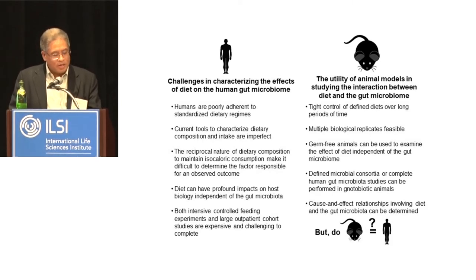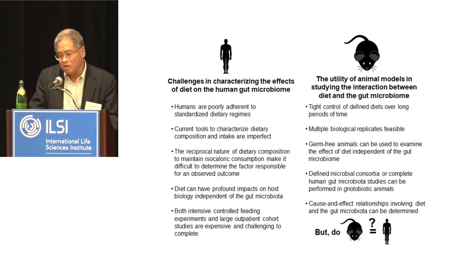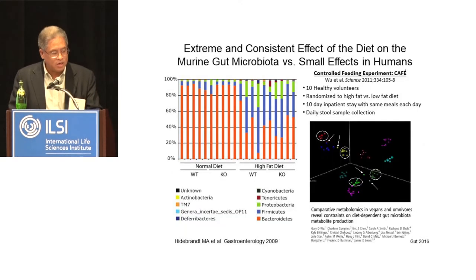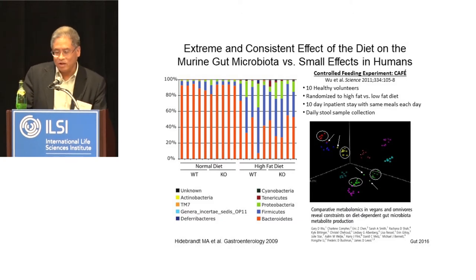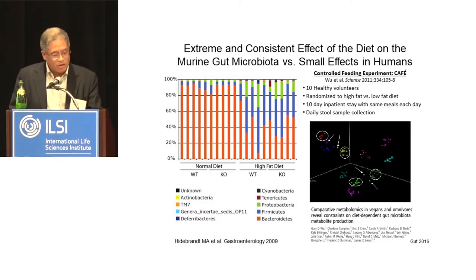But are mice like humans when we think about diet and the microbiota? In the first study we published in gastroenterology, we had two genotypes of mice — a wild-type and a knockout — and treated them with two different diets: a normal diet and a high-fat diet. On the high-fat diet, the colors in the histogram are massively different at the phylum level, and this is consistent regardless of genotype. So diet has a massive and very consistent effect on the composition of the mouse microbiota.